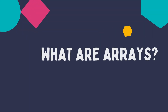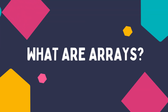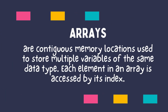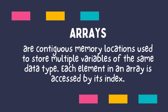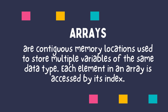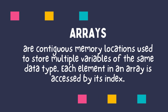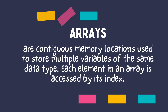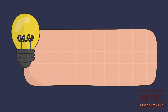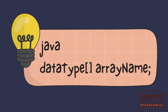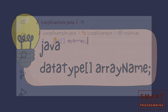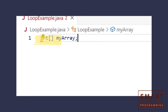What are arrays? Arrays are contiguous memory locations used to store multiple variables of the same data type. Each element in an array is accessed by its index. In Java, you declare an array using the syntax: data type, array name.